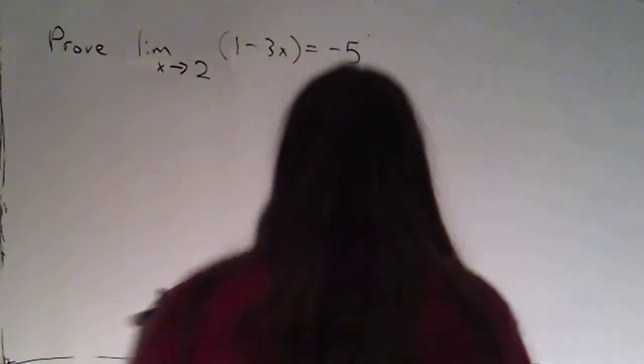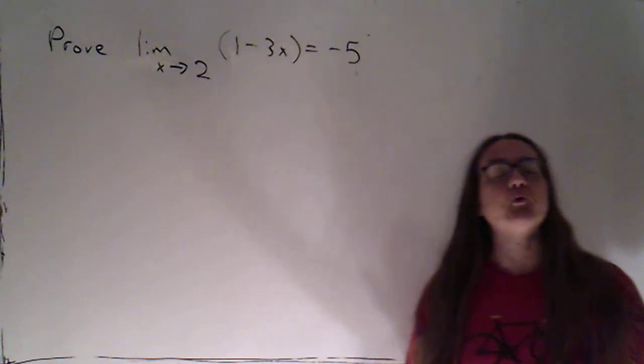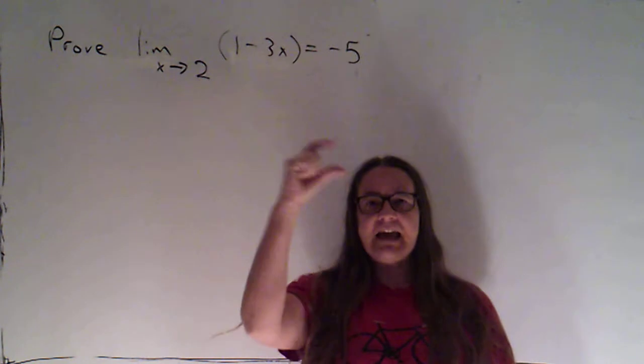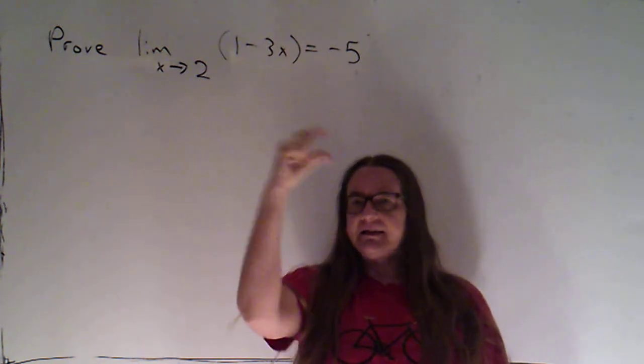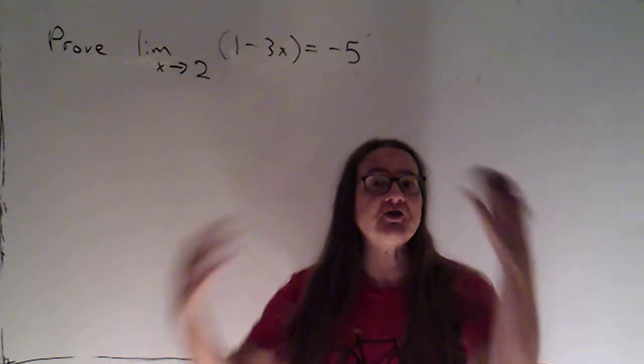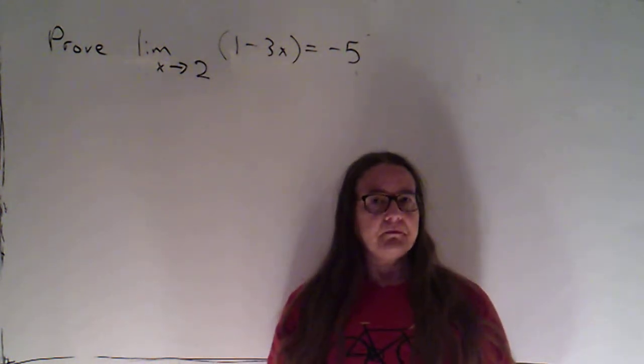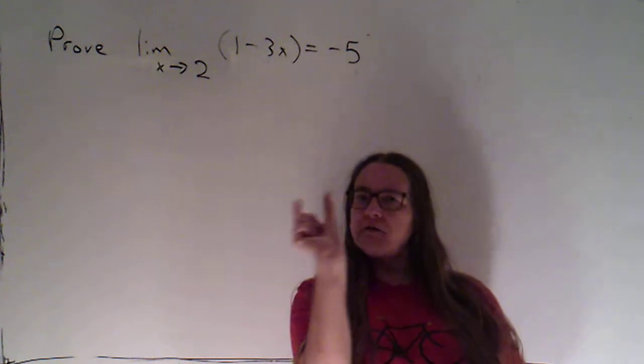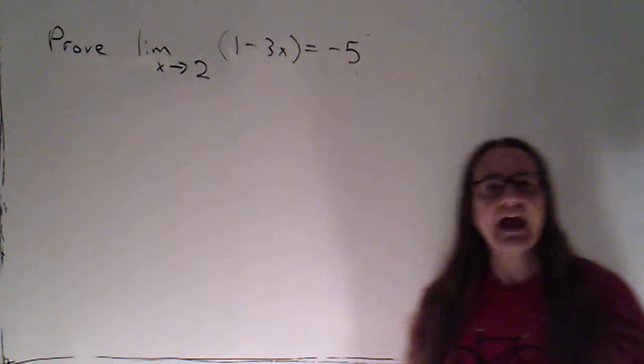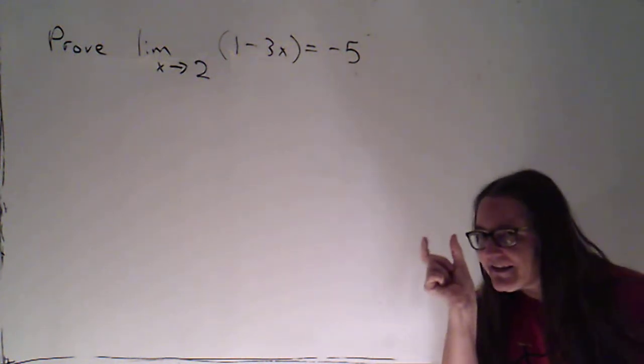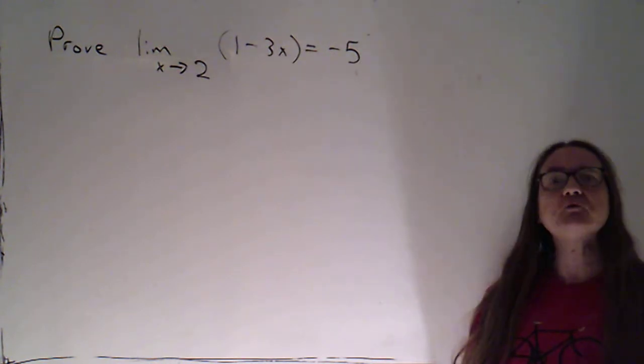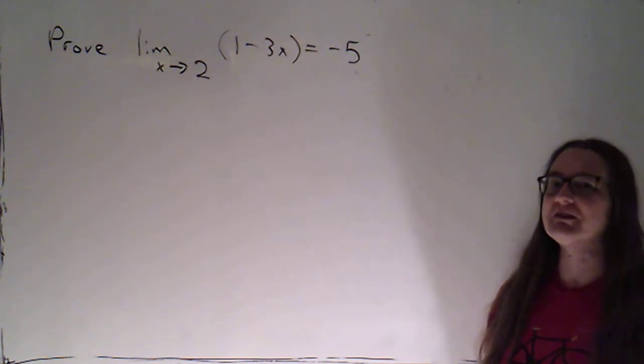In the last video, we started with a limit that was written at the top of the board, and we imagined that somebody had challenged us—that they didn't believe that was the limit. So they gave us an epsilon value and said, this is my tolerance for how close I want your y values to get to that limit. Bet you can't make them get that close. We showed that we could. We found a delta value, which was essentially the tolerance for the x values, and we said if our x values were within that distance of delta from the number they were approaching, then our y values would be within that epsilon value of the limit. We did that for a specific epsilon.